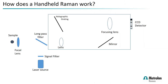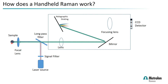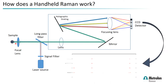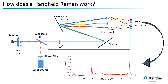How does a handheld Raman work? Essentially, we take a high-intensity laser source and focus the light onto a sample through a focal lens — we have a selection of these depending on the type of sample. The Raman shift is collected by filtering out the single wavelength from the laser and collecting only the Raman-shifted signal back into the device.